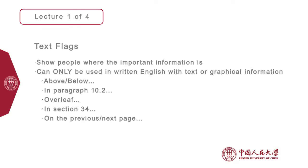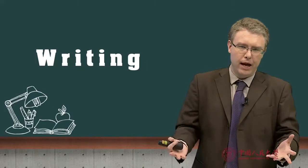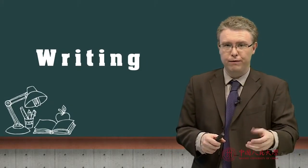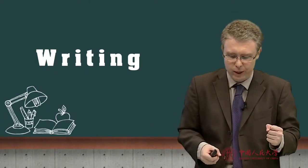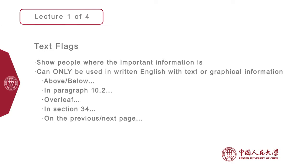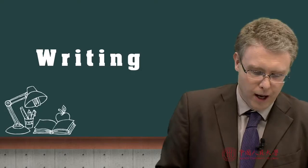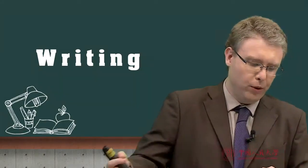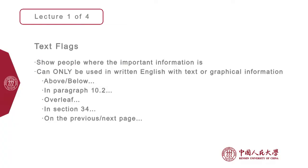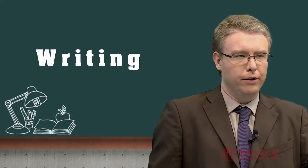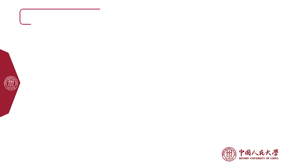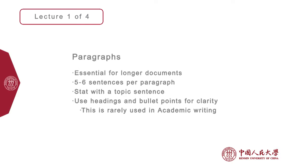Text flags, or signposts, show people where the important information is. If you've done any kind of academic writing course, you'll know that signposting is very important because it tells people where important information is coming up. These are only used in written English and only really with some kind of graphical supplement — a bar chart, a chart, or a diagram. Words like 'above,' 'below,' 'in paragraph 10.2,' 'overleaf,' 'in section 34,' 'on the previous page' — these show physically where the information is on the page. Make sure you've actually got the graphical information on the page you're referring to.